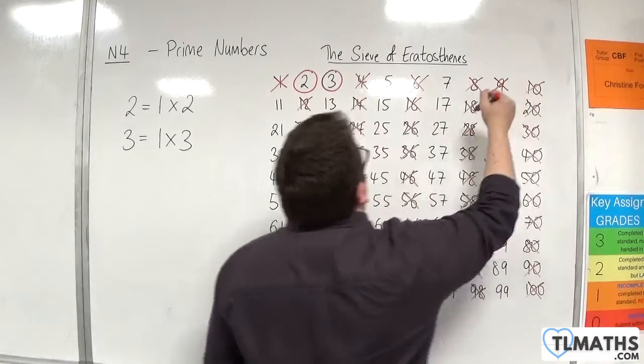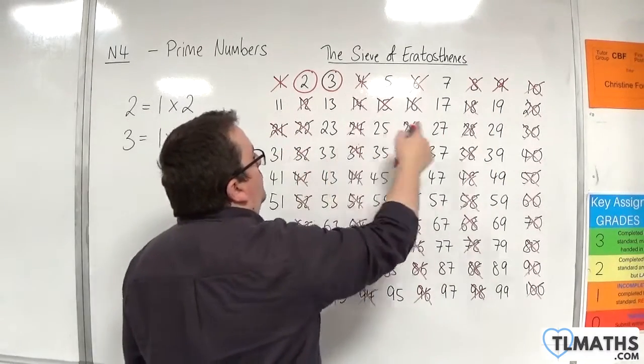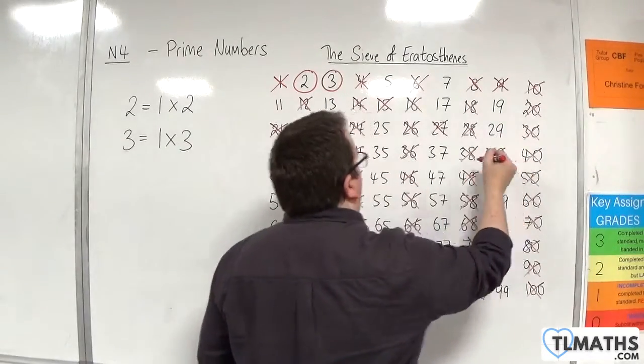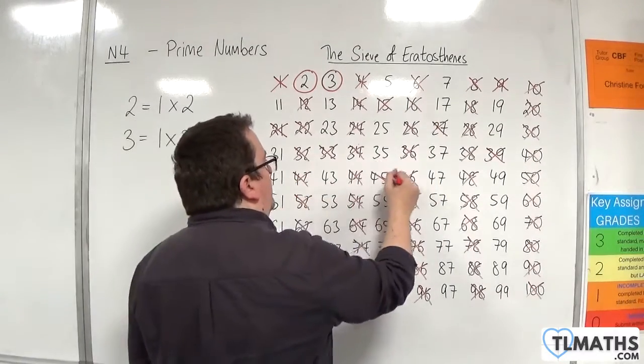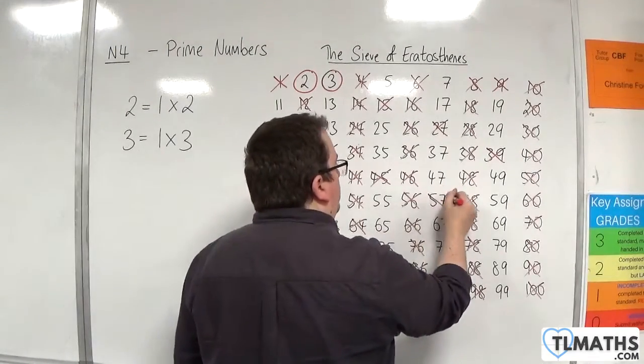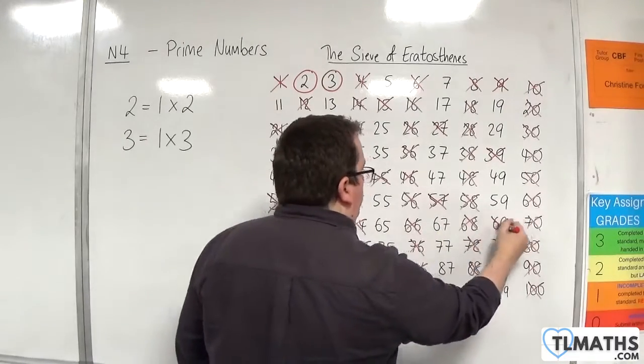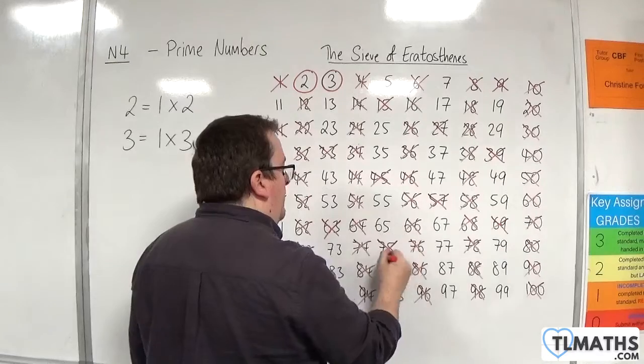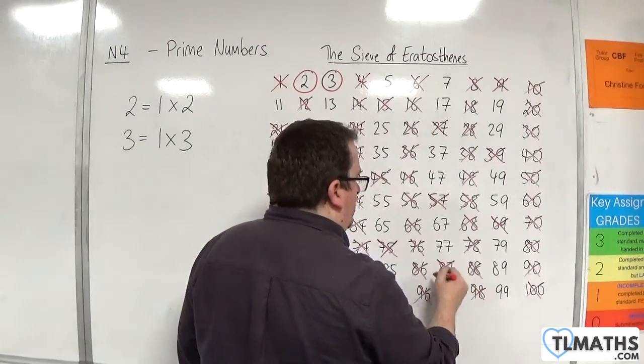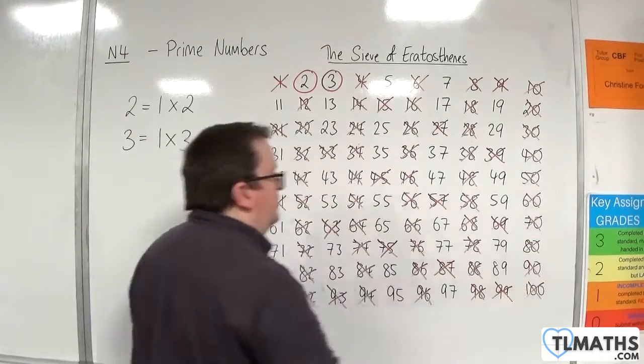So because three is a prime number six is gone nine is gone twelve is gone fifteen eighteen twenty-one twenty-four twenty-seven thirty thirty-three thirty-six and so on up to ninety-nine. They all go.